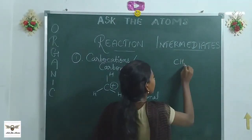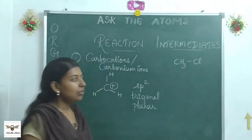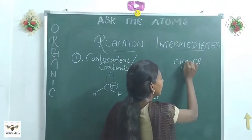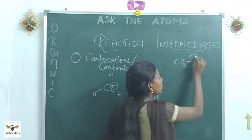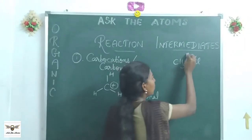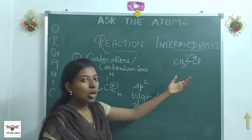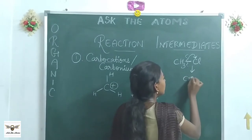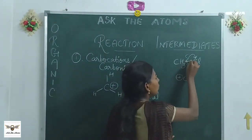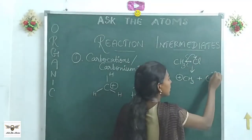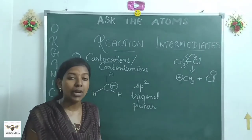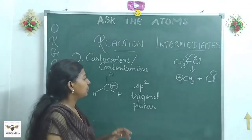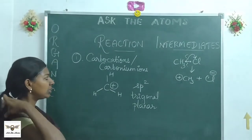For example, in CH3Cl, chlorine is electronegative, so it can cleave the bond such that both electrons go to chlorine. This is called heterolysis — unequal sharing when the bond is cleaved. As a result, CH3 becomes positive because both electrons go to Cl minus. So a carbocation is formed by heterolytic fission of a carbon–electronegative atom bond.